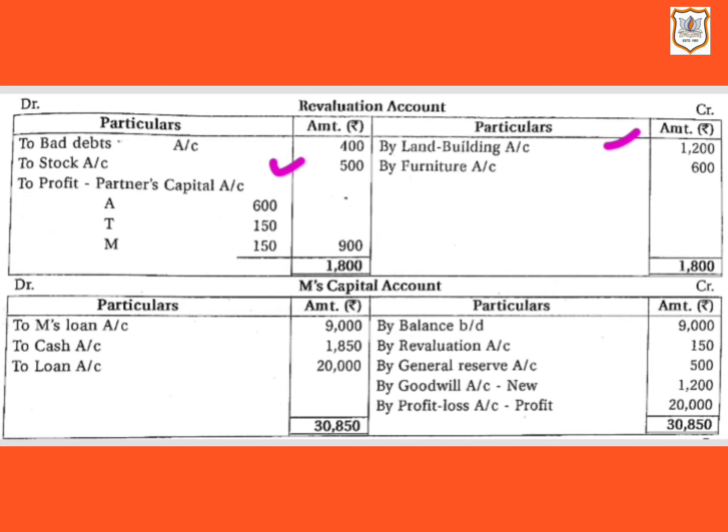Then 400 to be written off as bad debts from debtors. It is a kind of loss for the firm, so it will be recorded on the debit side of the revaluation account as 400.